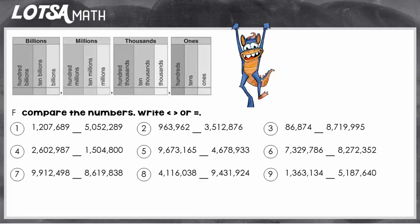So if we look at number one, this is a strategy you can use if each number has the same amount of digits. When we look at this number we can see that there are seven digits, and this number also has seven digits. If there are the same number of digits in each number, you can just start at the largest place value and begin comparing there.